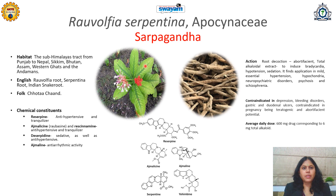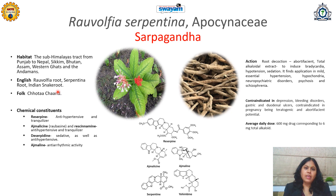The next traditionally important medicinal plant is Rauwolfia serpentina, belonging to family Apocynaceae. Commonly it is called as Sarpagandha, Rauwolfia root, or Indian snake root. It is called snake root because the shape of the roots is wavy and looks like a snake. In folk communities it is also called as Chhota Chand. It is naturally found in the sub-Himalayan tract, Western Ghats, and Andamans, but due to its commercial value it is also cultivated in different parts of India.